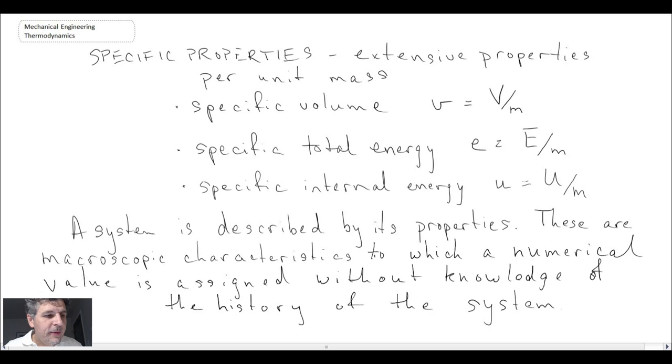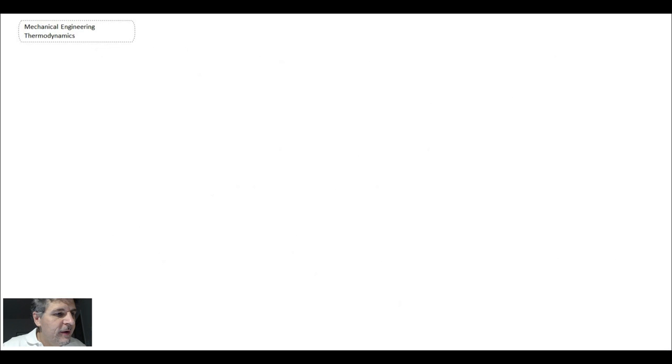Where do properties come from? Properties come from a number of different sources. The origins of properties include: we can have properties that we directly measure. Examples of these could be pressure and temperature. You have a pressure transducer, you have a thermometer. So they can be directly measurable.